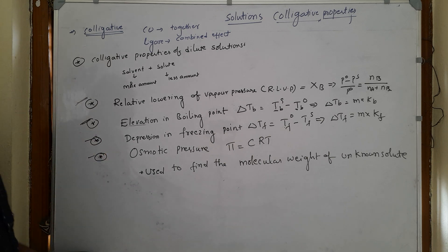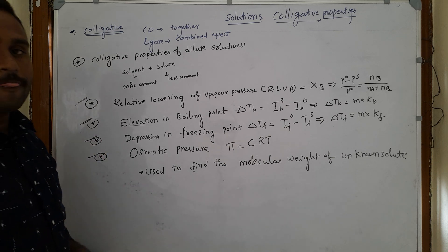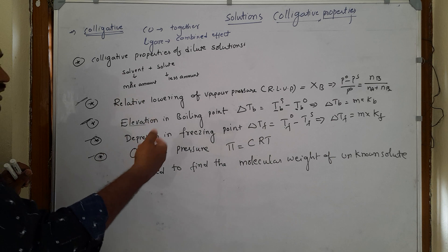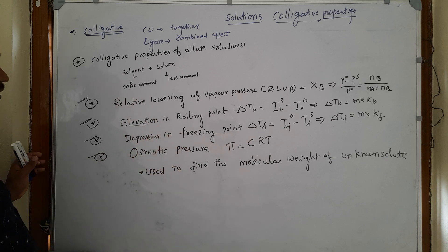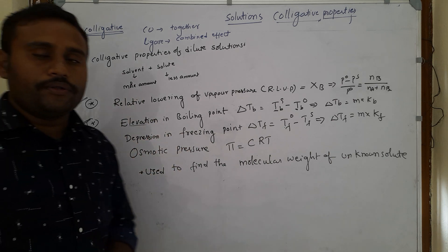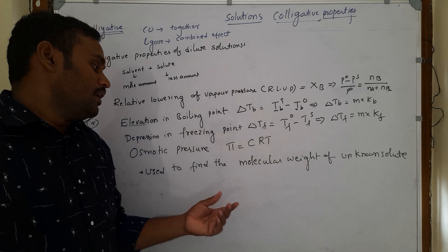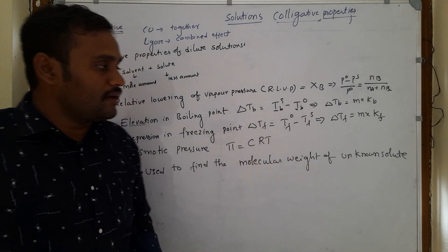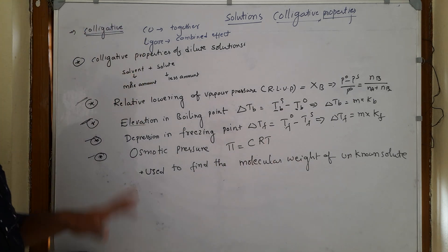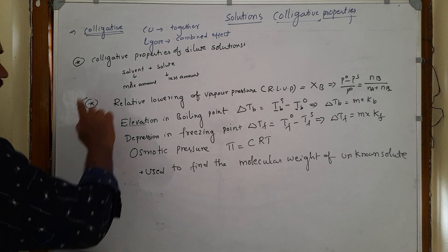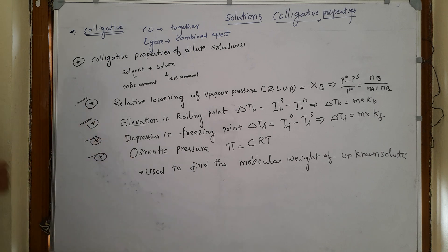Now let us discuss each one by one — how we measure different types of colligative properties and how we use them to measure the molecular weight of an unknown solute. Let us start with the relative lowering of vapor pressure.